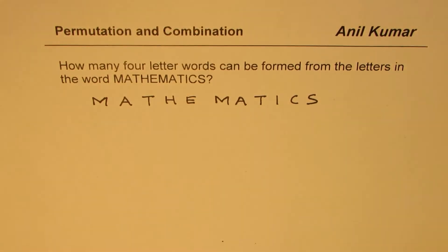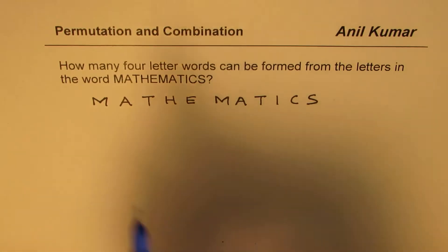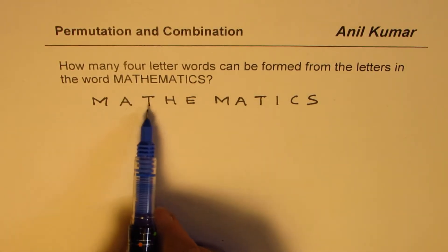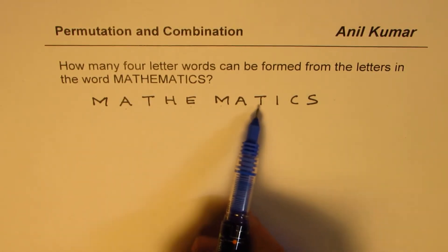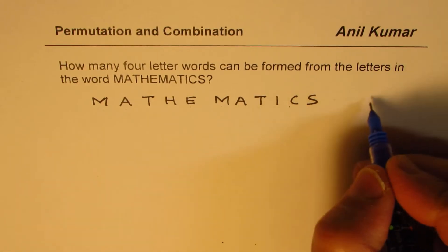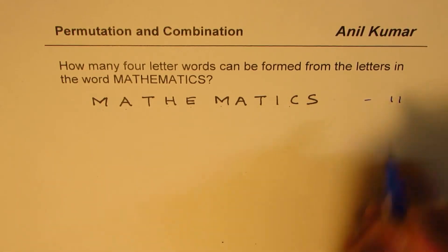So whenever you are given a word, first thing is to count the total number of letters in it. 1, 2, 3, 4, 5, 6, 7, 8, 9, 10, 11. So we have in all 11 letters.